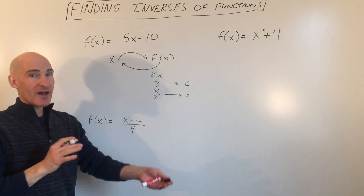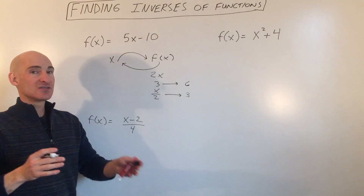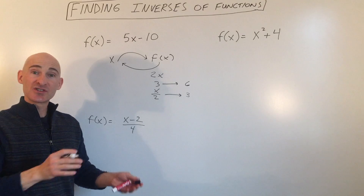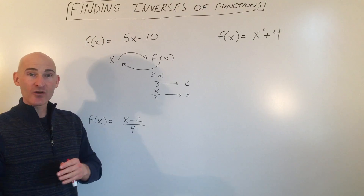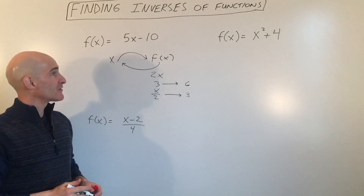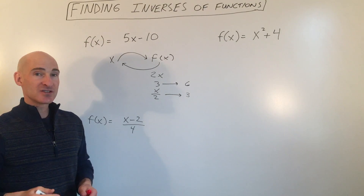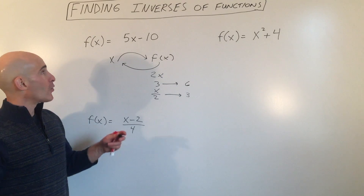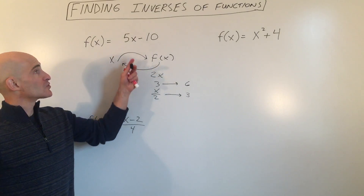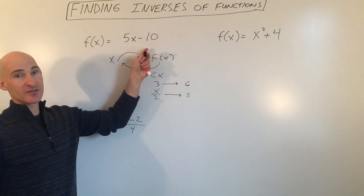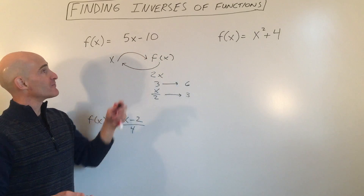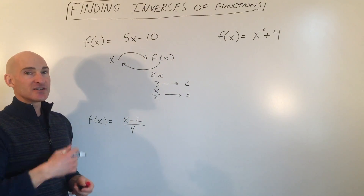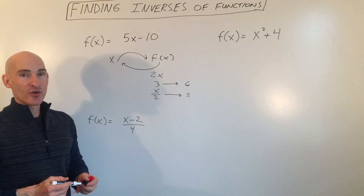So multiplying and dividing are inverses, adding and subtracting are inverses, squaring and square rooting are inverses. There are a lot of different functions that are inverses of one another. But what we're trying to do is we're trying to find a function that undoes that original process.